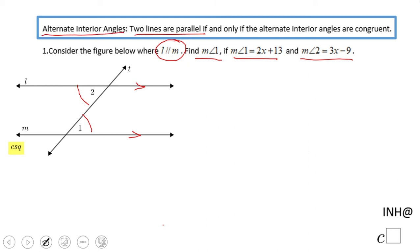Angle one and two are alternate interior angles, and they are congruent. Alternate interior angles are congruent.